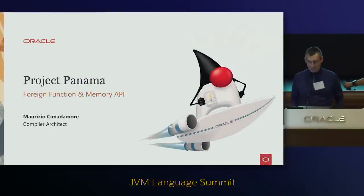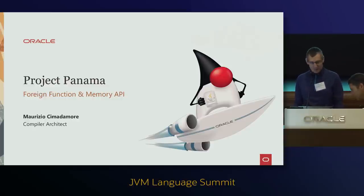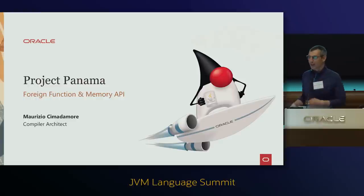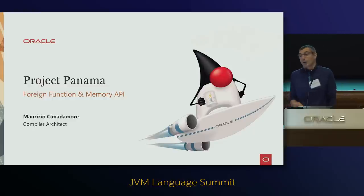Hello and welcome to this Project Panama update. I'm happy to be here after four years since the last summit where we kicked off some of the ideas that are going to be discussed in this talk. The Foreign Function and Memory API is really a product of the JVMLS, or at least I'd like to think so.